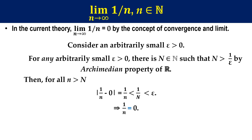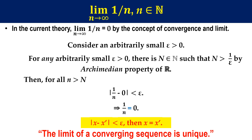Then, 1 over n equals zero. This conclusion is based on: if absolute value of x minus x prime is smaller than epsilon, then x equals x prime — used in the proof of the proposition that the limit of a converging sequence is unique.